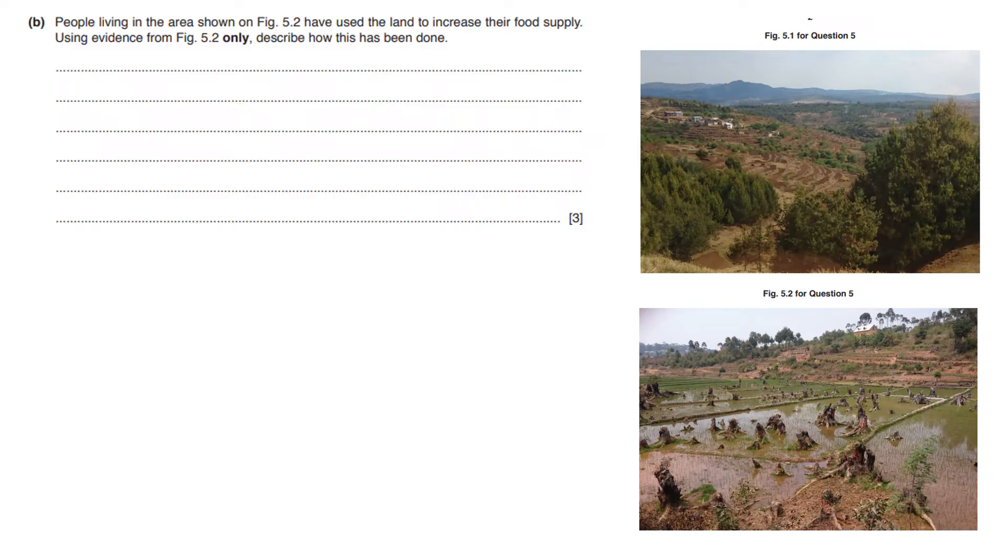Next bit is using evidence for 5.2 only describe how this has been done. How have they used this land to increase food supply? Well if you're going to increase your food you need several things. You either need more sun, more rain, more fertile lands. So you can either get more sun, maybe grow that in some sort of house with UV light. You add more water or you cut down trees.